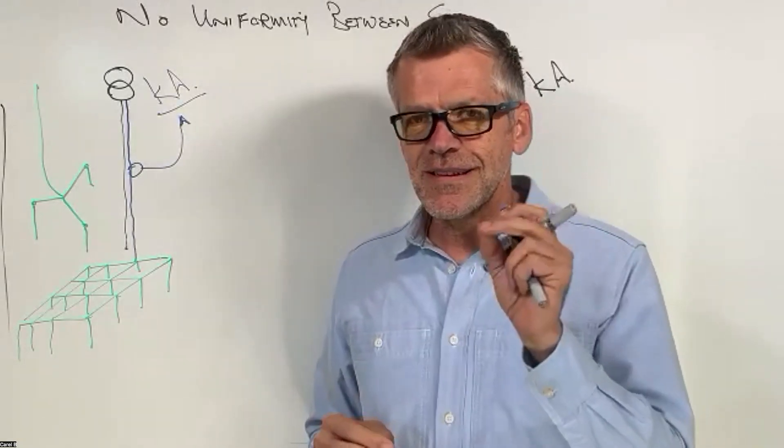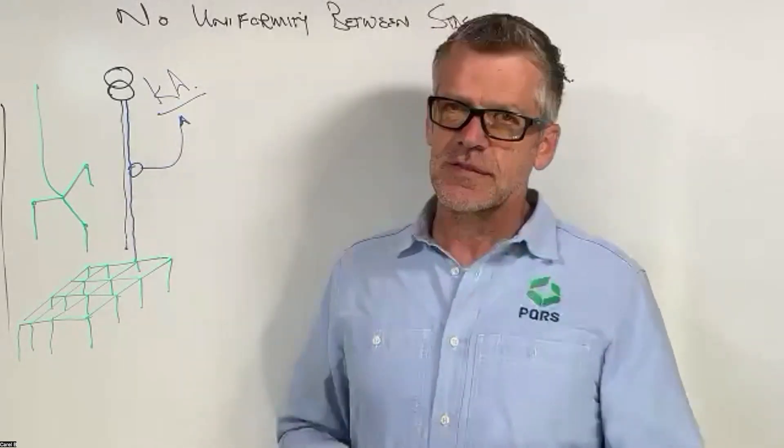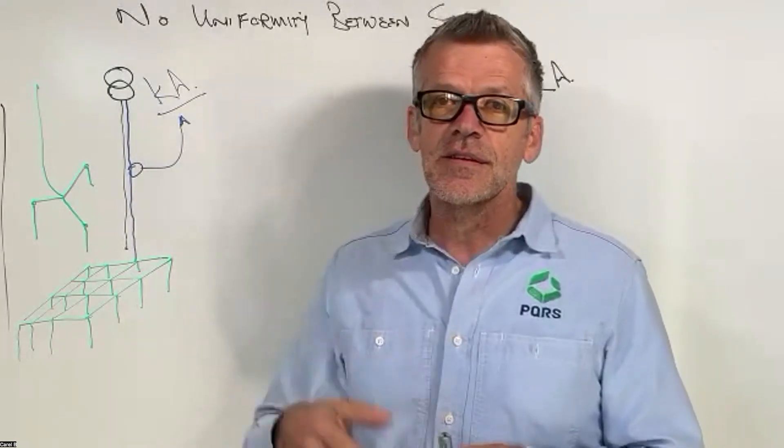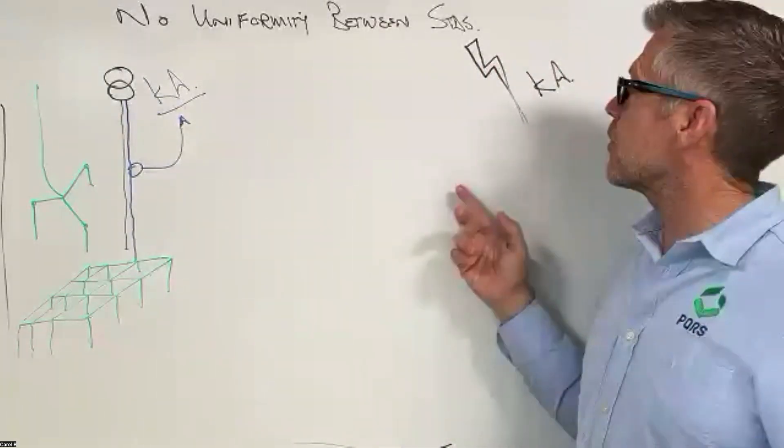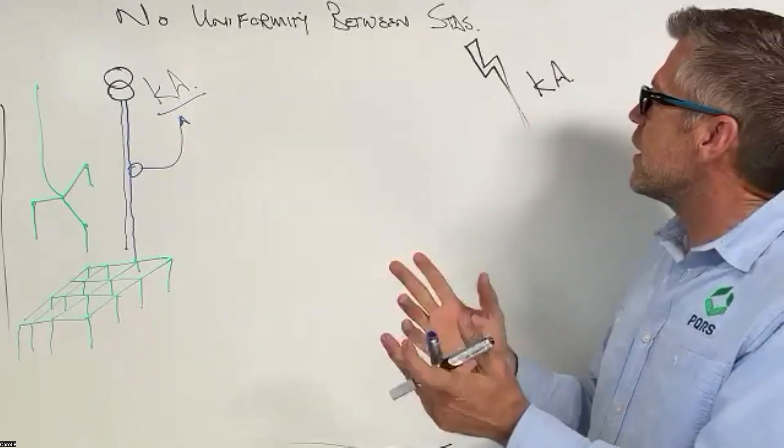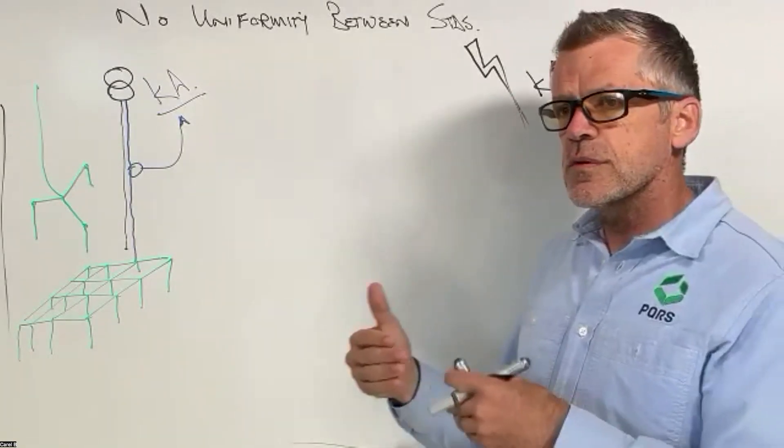We've got quite a few guys that are lightning specialists and they would be able to confirm that. So you're sitting at between 16 and 20 kA, that's the max in South Africa. Maybe with the way weather changes and where weather conditions are going, maybe it's going to be increased.